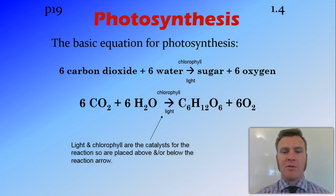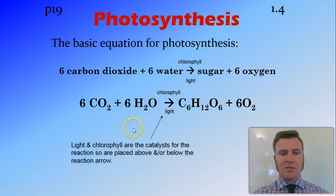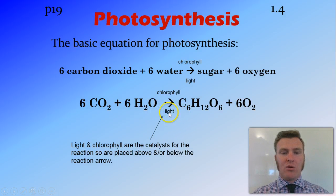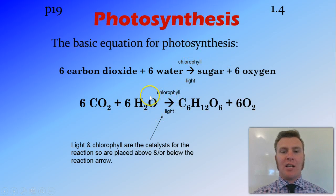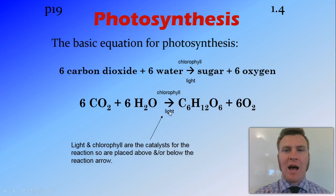Just a little bit of chemistry here. When we write equations in science, and particularly in chemistry, this is a chemical equation. Light and chlorophyll are the catalysts, so the reaction has to occur in the presence of them. However, they're not used up. Catalyst enzymes aren't written in the reactants or the products, but are written over the top and the bottom of the actual arrow.